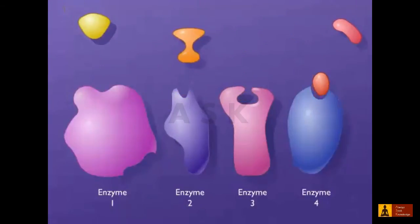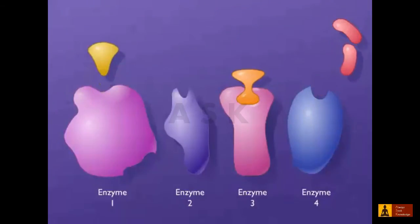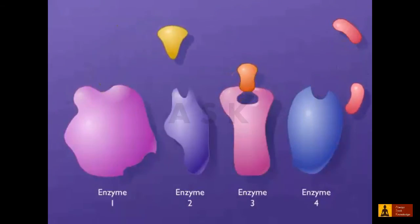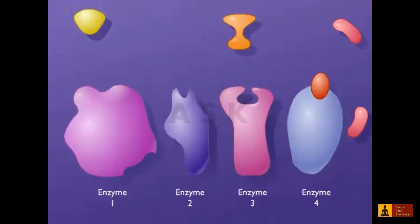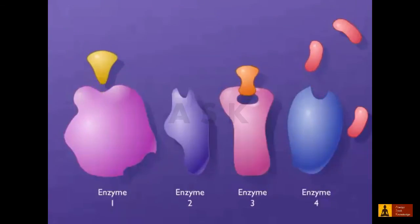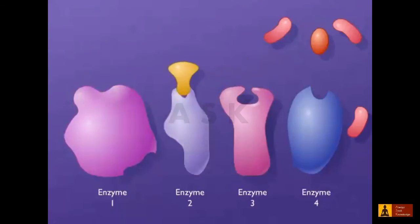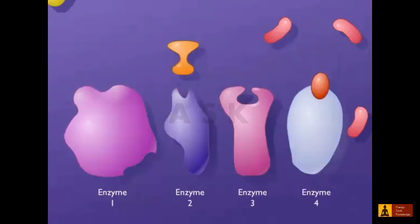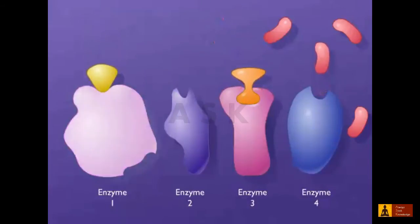If the end product of a pathway, such as an amino acid, becomes available in the environment, it is unnecessary and wasteful for the cells to continue to produce the product. Cells therefore have the ability to shut down a pathway when it is not needed.